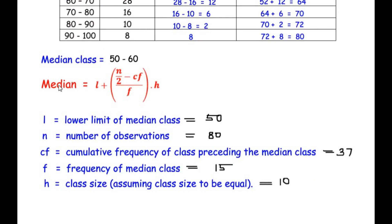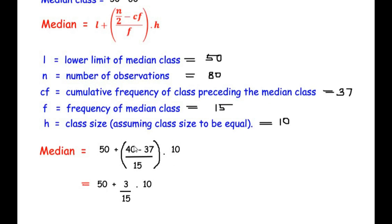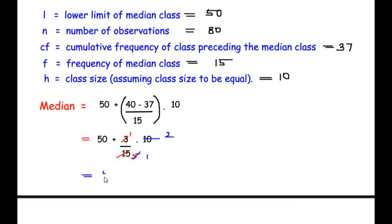Substituting into the formula: Median = 50 + (80/2 − 37) / 15 × 10 = 50 + (40 − 37) / 15 × 10 = 50 + 3/15 × 10. Simplifying, 3/15 reduces to 1/5, and 1/5 × 10 = 2. So Median = 50 + 2 = 52.